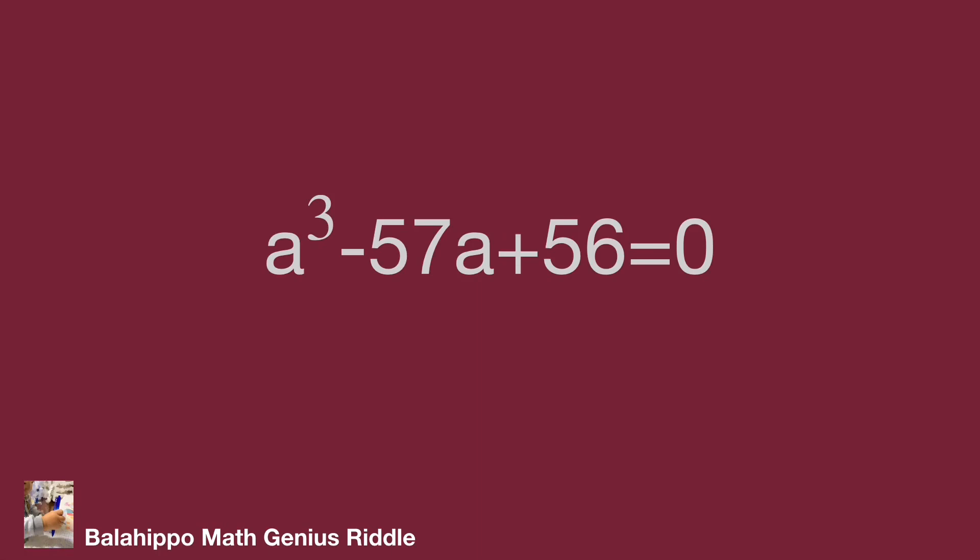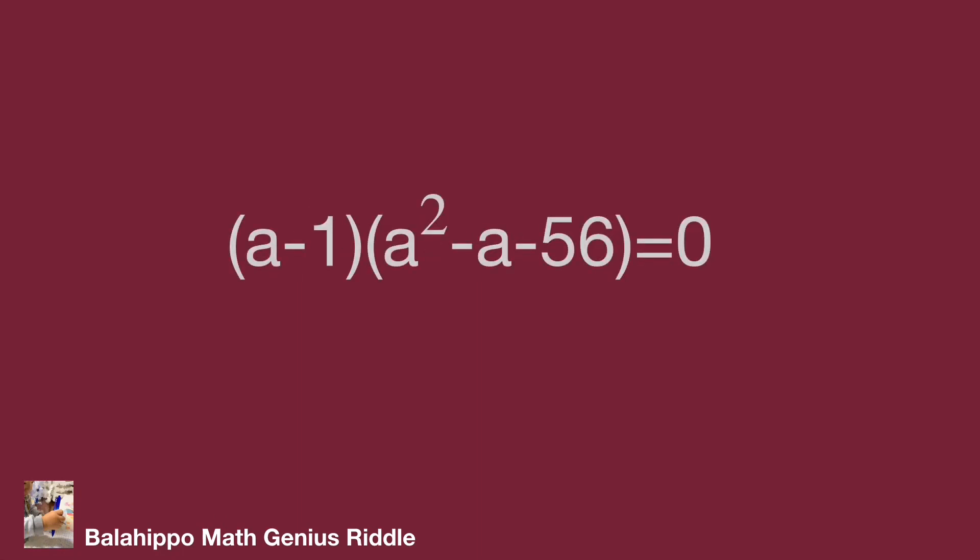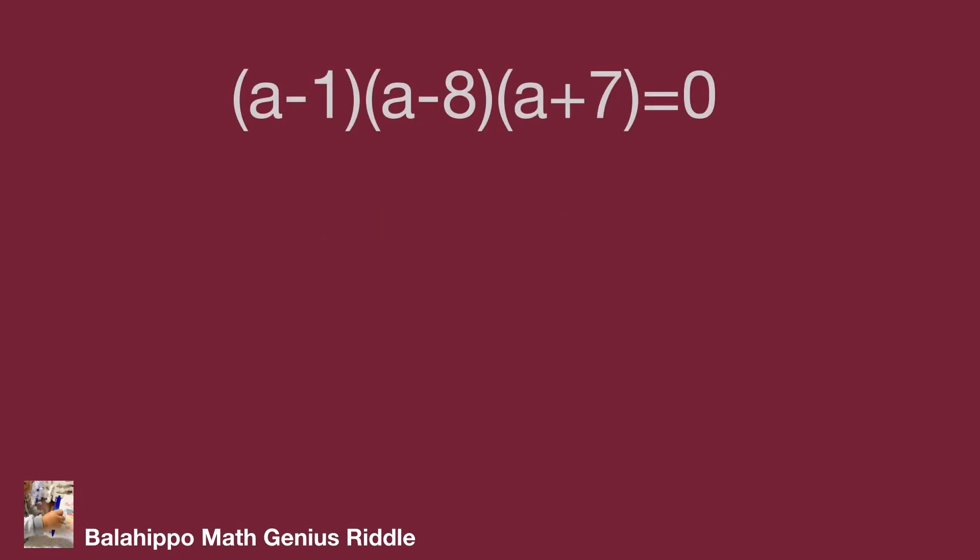So this equation is quantity a minus 1 multiplies quantity a squared plus a minus 56 equals 0. Factorize it to become quantity a minus 1 times quantity a minus 8 times quantity a plus 7 equals 0.